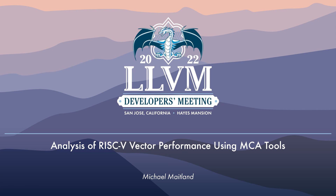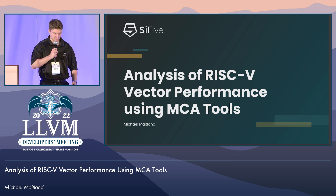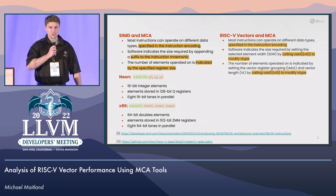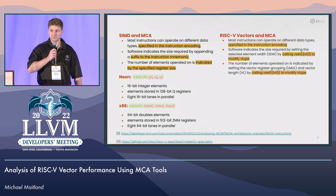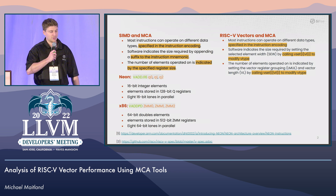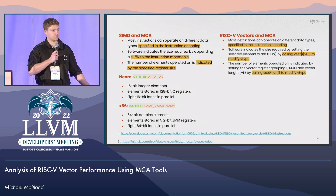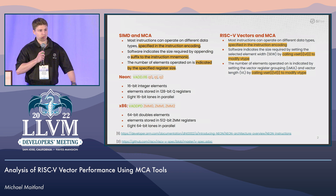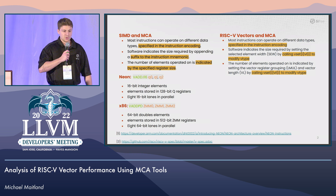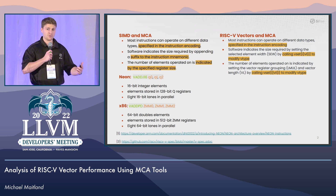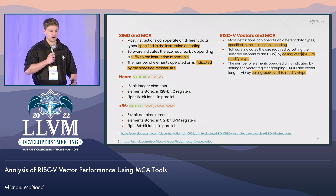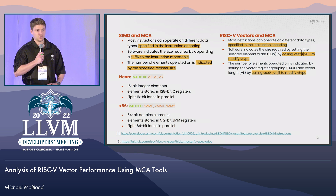Hello everybody, I'm Michael and today I'm going to be talking about analysis of RISC-V vector performance using MCA tools. MCA is a tool within LLVM that provides performance analysis based on the LLVM scheduler model. In most SIMD architectures, instructions can operate on different data sets, and the software indicates what size those operations are, the number of elements operated on, and this information is all encoded in the instruction itself.